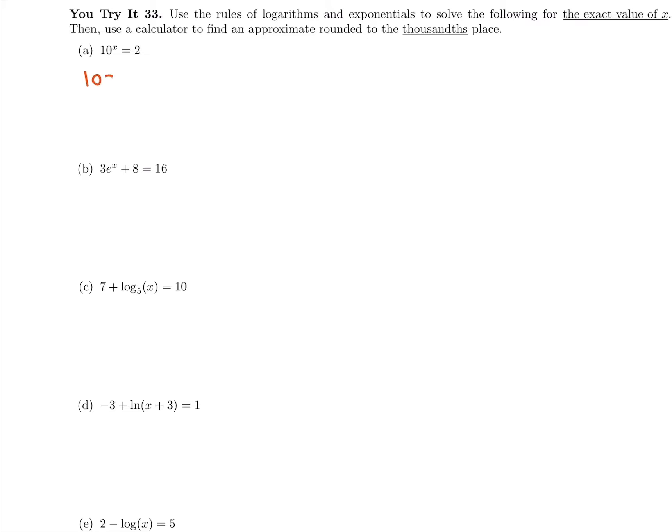We already have 10 to the x on one side by itself, so I'm going to take the log of both sides. It's going to be a common log since it's base 10. The log and 10 to the x will cancel, and you'll just be left with x equals log of 2. There's my exact answer.